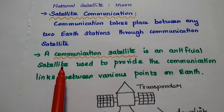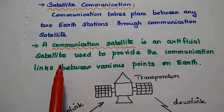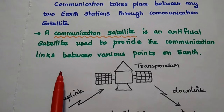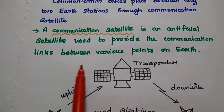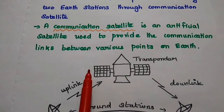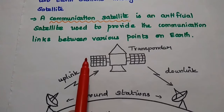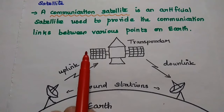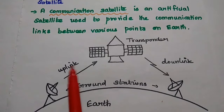So, what is meant by a communication satellite? It is an artificial satellite which is used to provide the communication links between various points on earth.